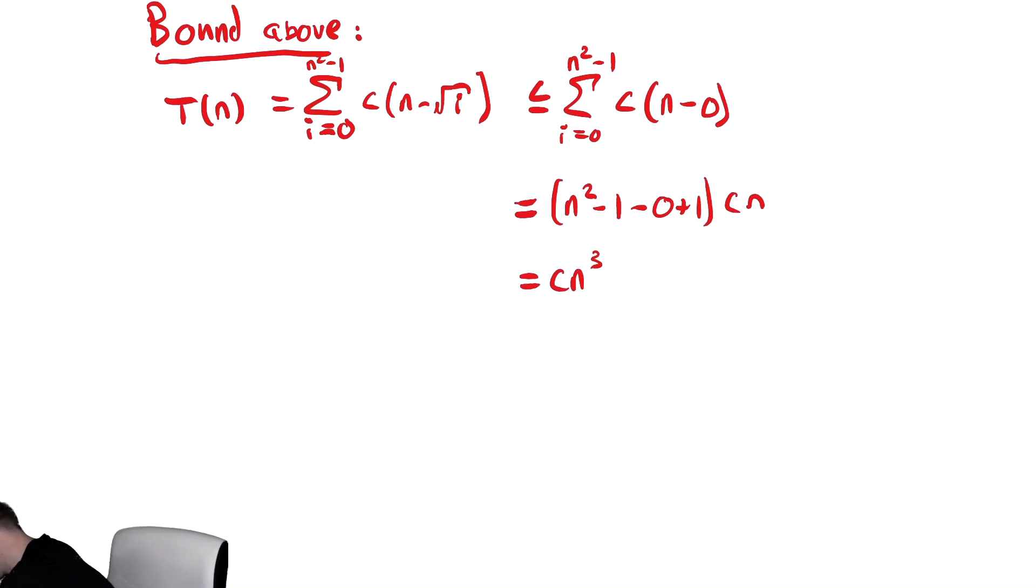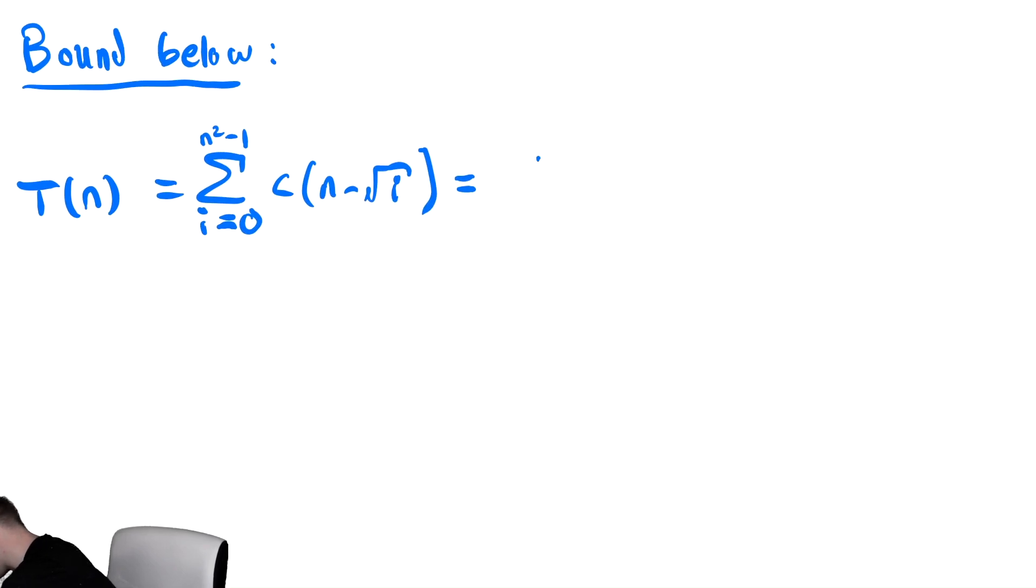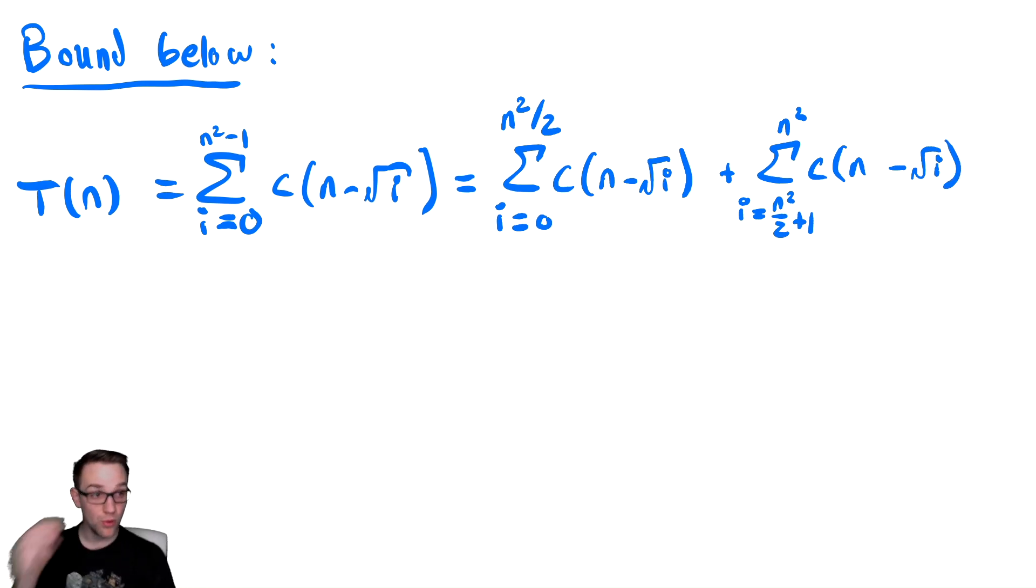Now let's try to bound it below. To bound this below, we're going to do the same thing we've done every other time, which is we're going to take the summation and split it in half. So T(n), which we can copy paste from above and read in our correct color, is equal to split the summation in half, and this is the sum from i equals 0 to n squared divided by 2 plus 1 to n squared of c, and then n squared minus radical i. Sorry, n minus radical i. Let's fix that.